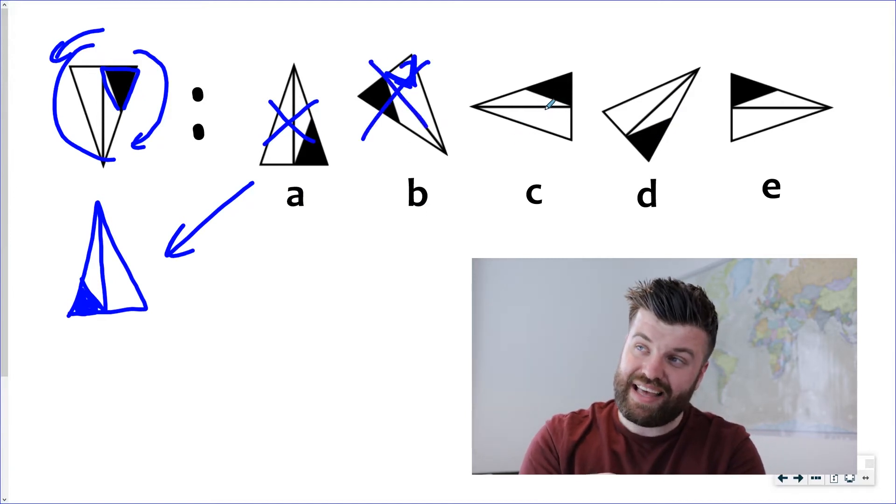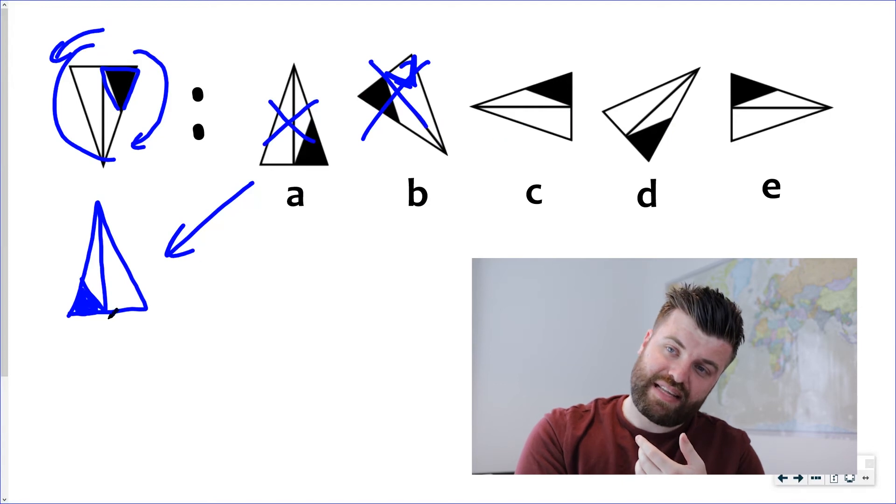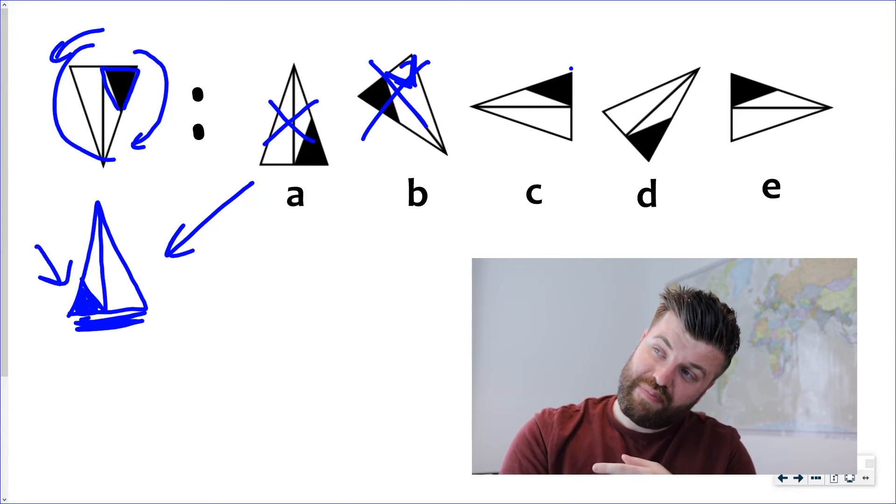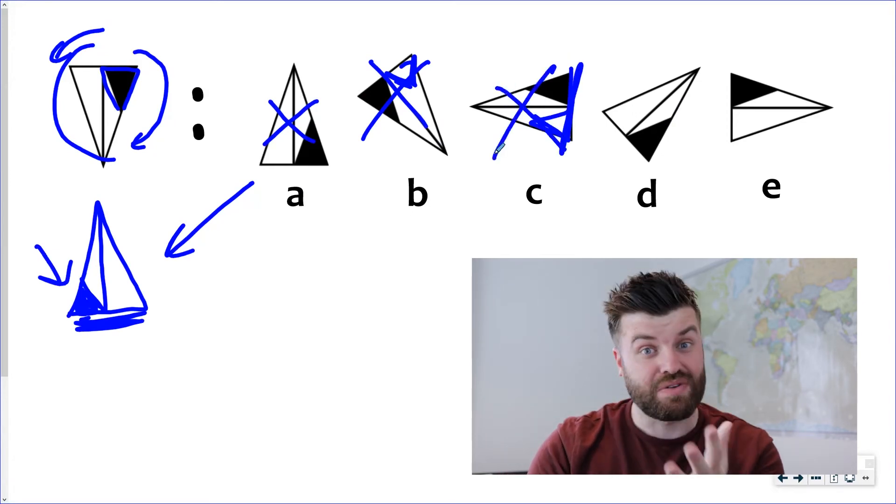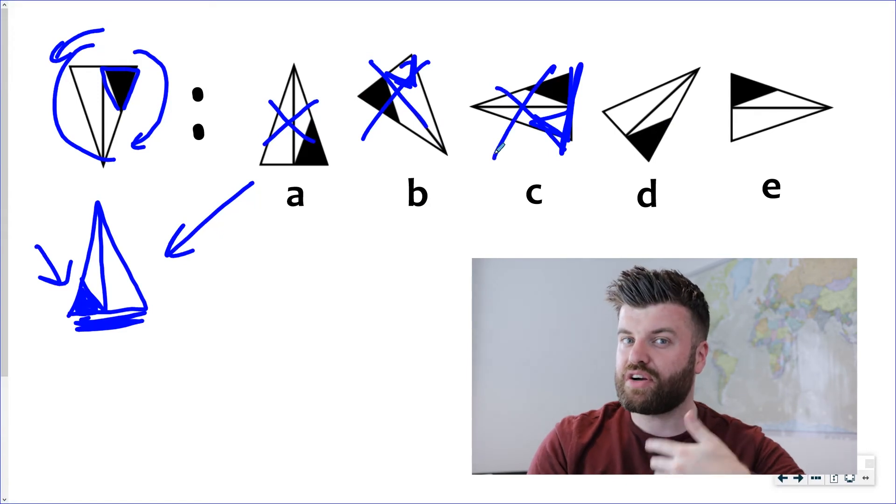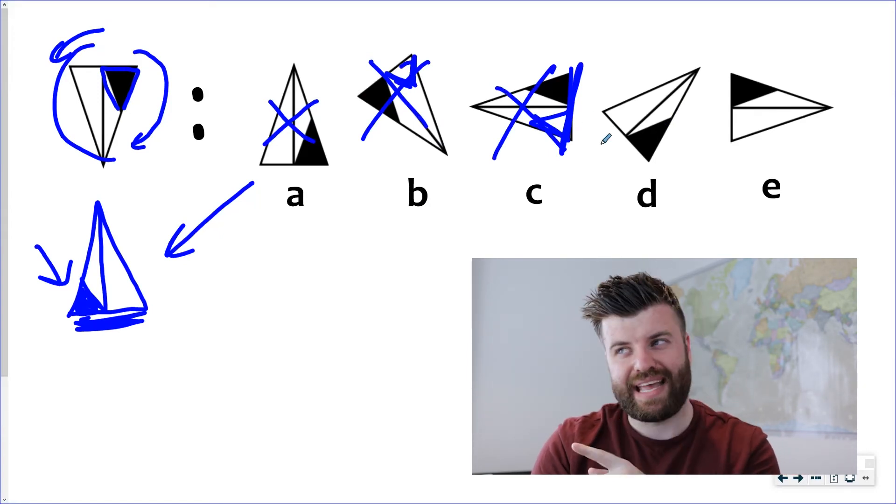Looking at C again look at our base down here. The black shading is on the left now because we've rotated it. If our base is here the black shading should be on the left and it's not so it's not C. And slowly by deduction we're down to two already. So is it D or is it E?